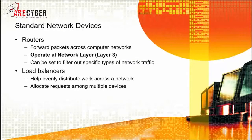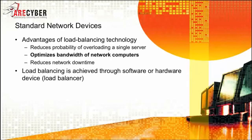Next, we have routers. The router forwards packets across computer networks and operates at the network layer, or layer three. They can be set to filter out specific types of network traffic. Routers can also be used as load balancers to evenly distribute work across the network and allocate requests among multiple devices, reducing the probability of overloading any single server and helping optimize bandwidth.